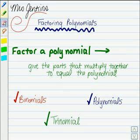Now, what are you doing when you factor a polynomial? Remember, factoring a polynomial is kind of the opposite of multiplying it. You're going to take apart the polynomial and you're going to give the parts, or the factors, that would multiply together to equal that polynomial.